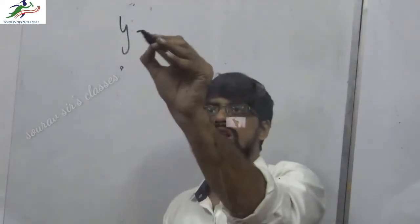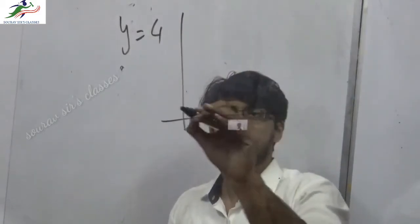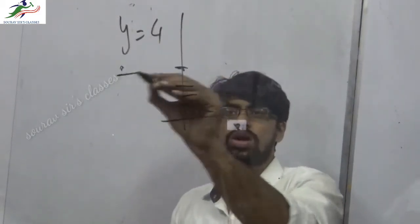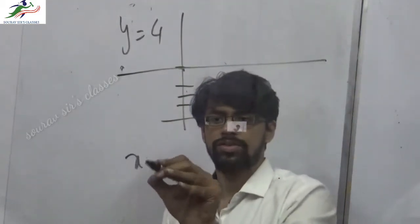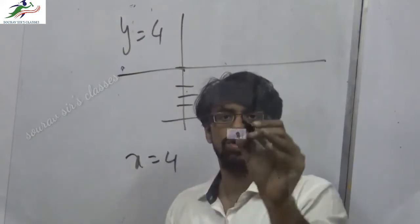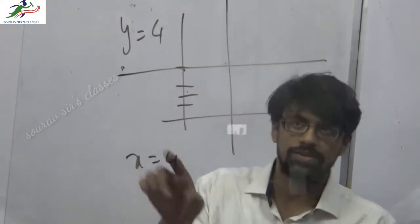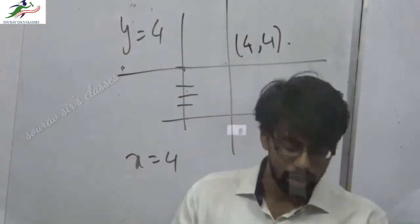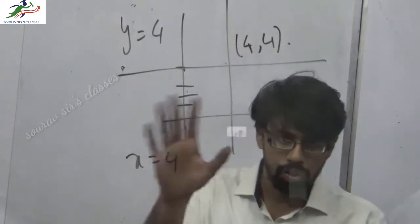For special linear cases: y equals 4 is just a horizontal line — you mark it at 4 on the y-axis and draw straight across. x equals 4 is a vertical line at 4 on the x-axis. The intersection point of these two would be the point (4, 4).